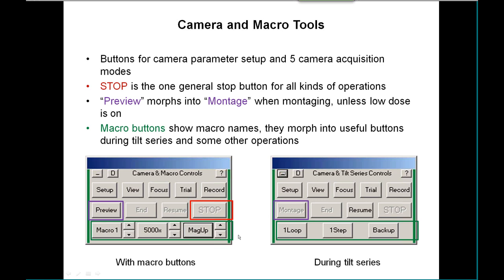A very important panel is the camera and macro controls. It has buttons for starting the camera parameter setup dialog, which we'll come to in a moment, and five buttons for the five different camera acquisition modes that all have independent parameters.